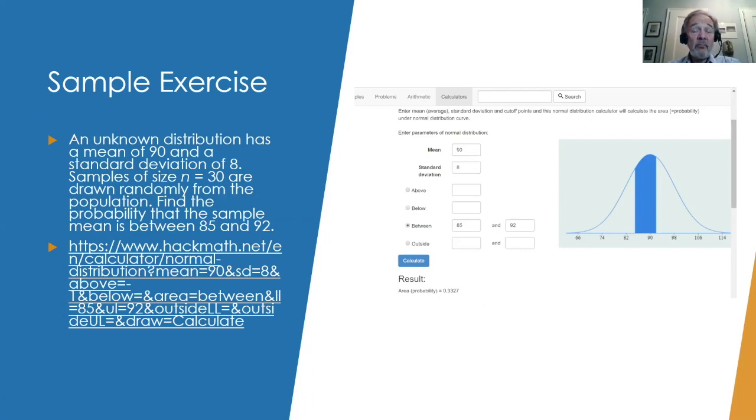Well, since the distribution is a normal distribution, we can again just use the normal curve. So here we have a mean of 90, standard deviation of 8, and between 85 and 92, we see that we have an area under the curve of 0.3327 or 33.27%. This is just the same as calculating the area under the normal curve in any other circumstance.